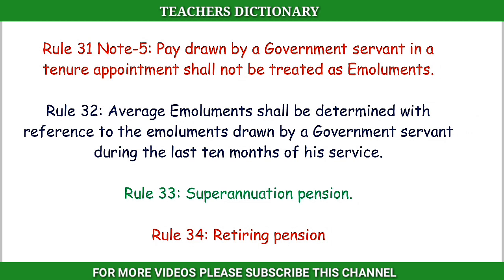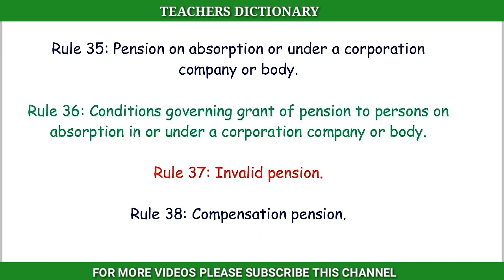Rule 33: Superannuation Pension. Rule 34: Retiring Pension. Rule 35: Pension on absorption in or under a corporation, company, or body. Rule 36: Conditions governing grant of pension to persons on absorption in or under a corporation, company, or body.